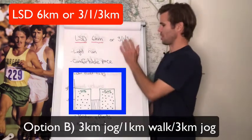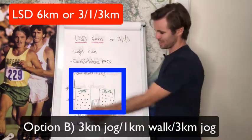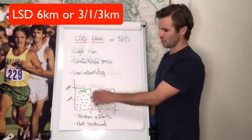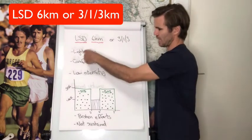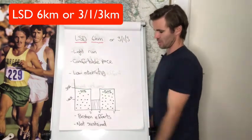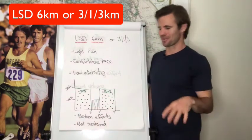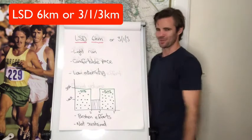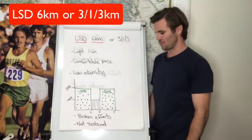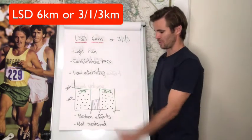If you choose the B option of three-one-three, that is a three kilometer jog of around 50%, same as this but three kilometers, and then you're going to have a one kilometer walk where you're going to recharge, regroup, and then we hope you can build into another three kilometer run to finish yourself off.